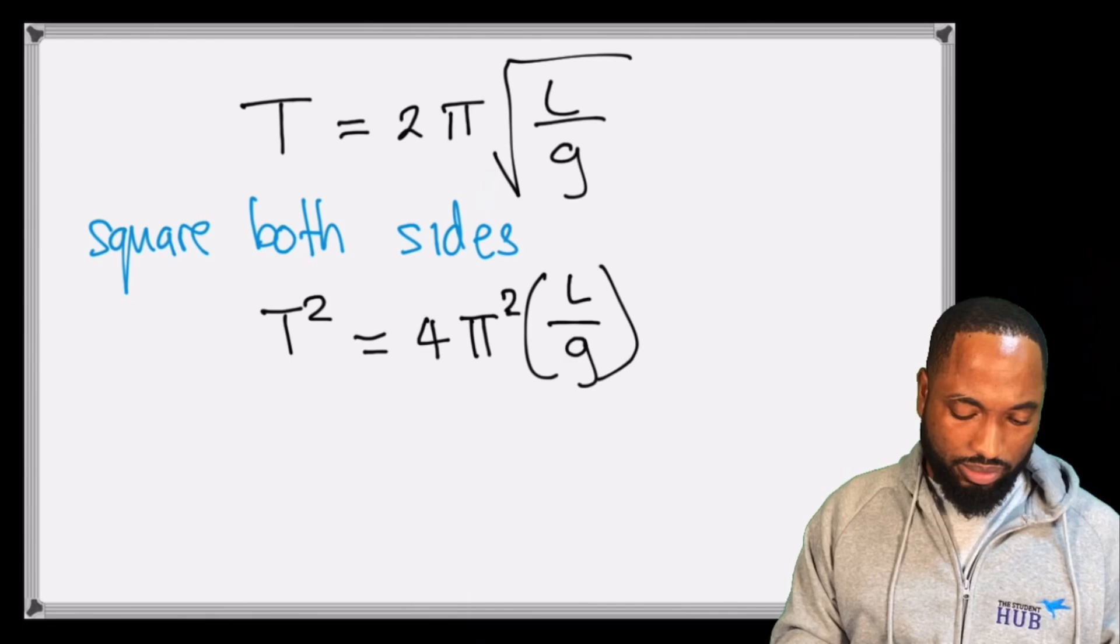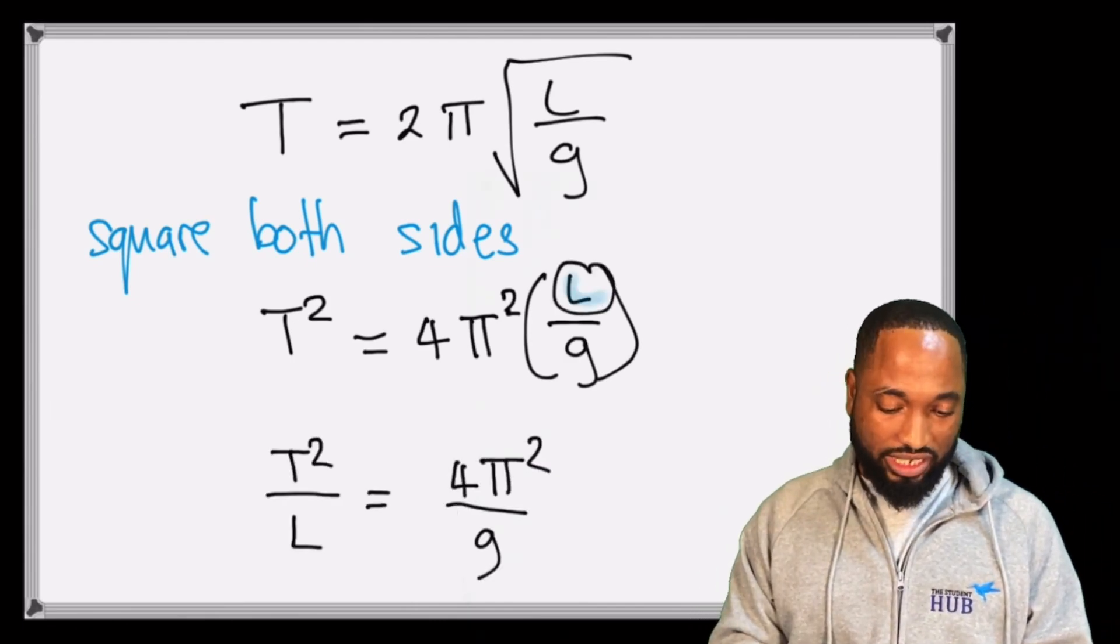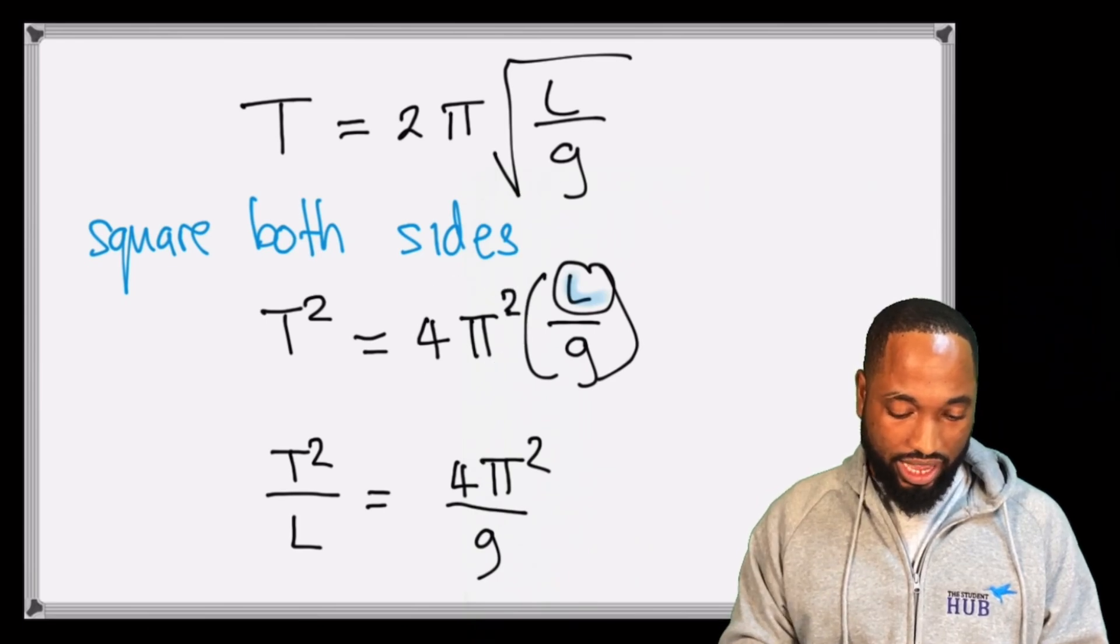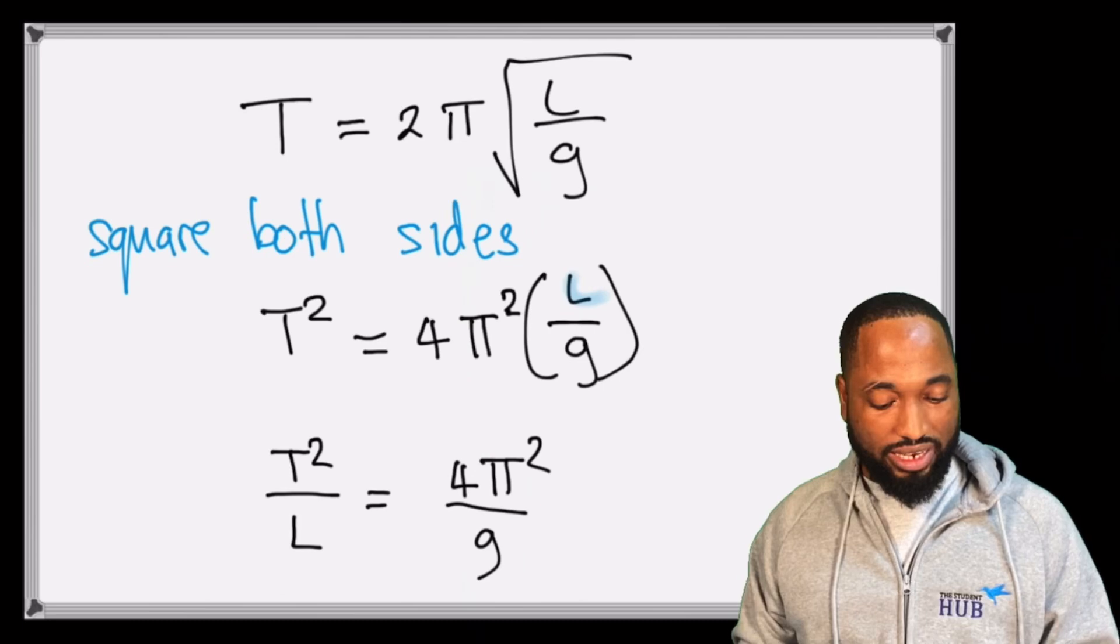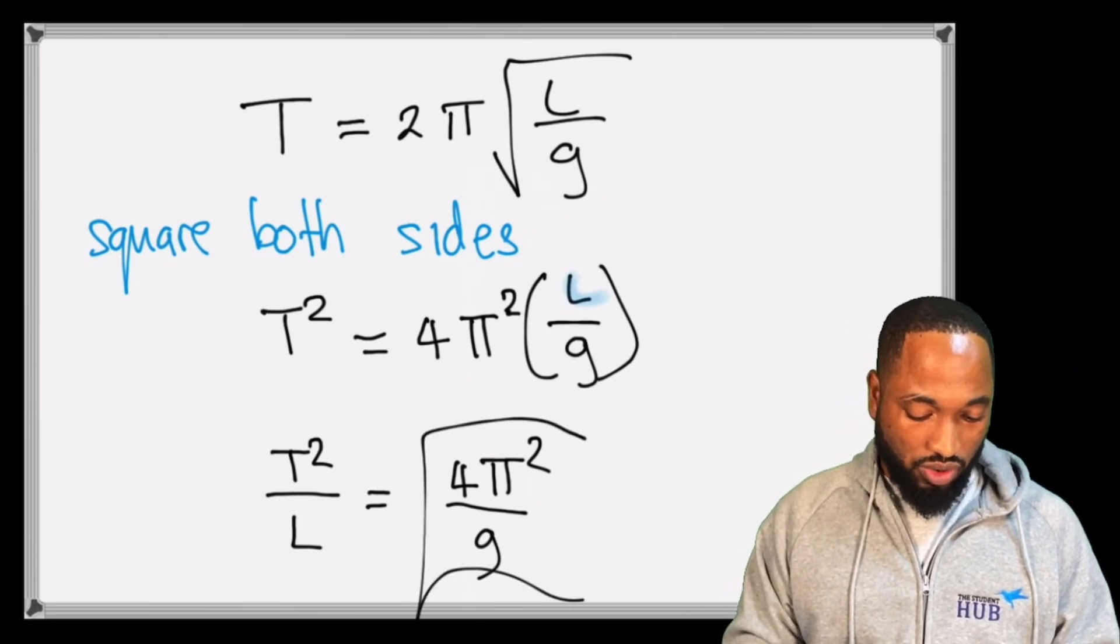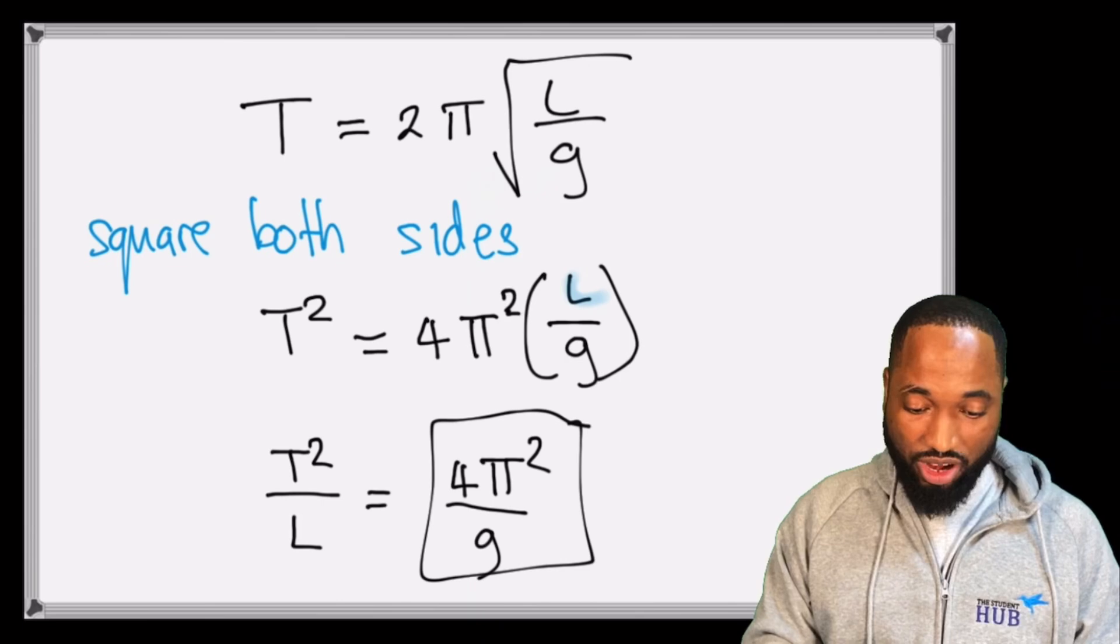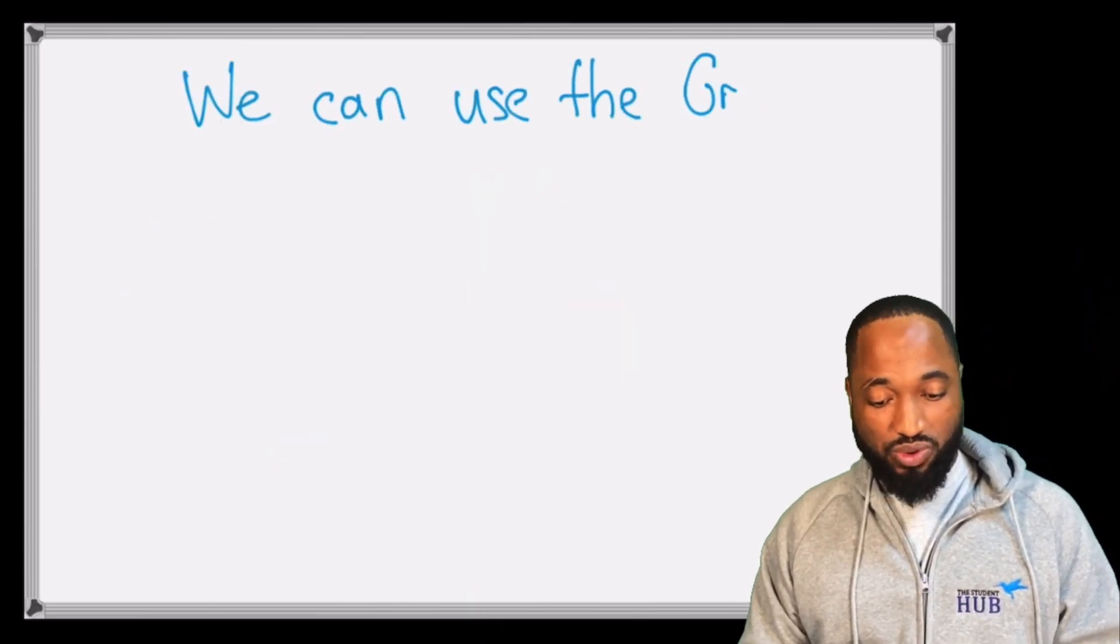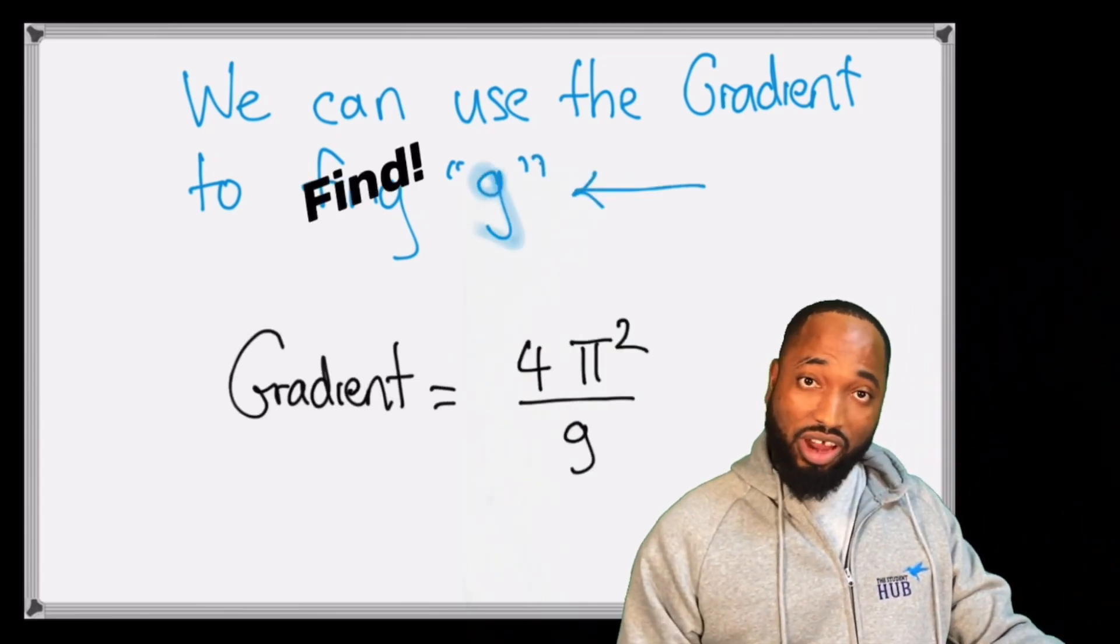So if I make that the subject of the formula to make that, I'll just take this L and send him down there. This 4π² will stay there. The g will remain here. So we end up with T²/L is equal to 4π²/g. So in other words, what is this telling me? Remember, this is your gradient. In other words, this is telling me we can now use the gradient of the graph to discover gravity, to discover the value. Hopefully, hopefully when you do this, you get a nice 9.8 looking figure.